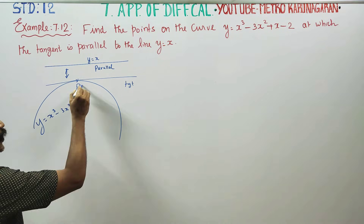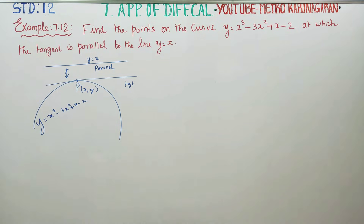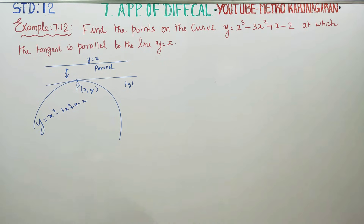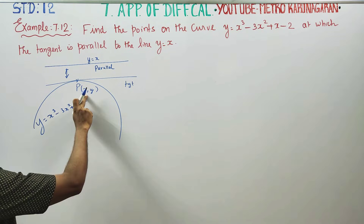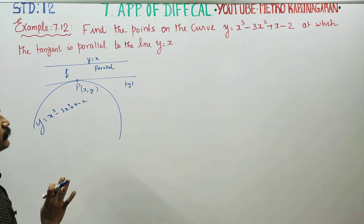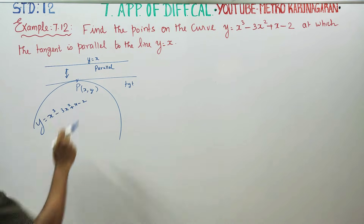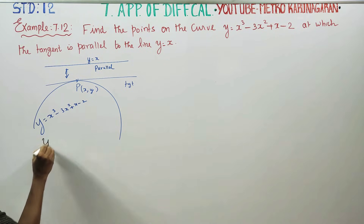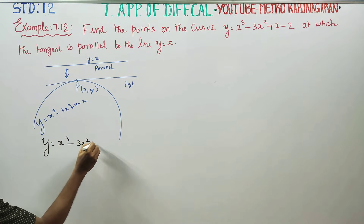Find the point (x, y) — that is the question. The curve is given, and we need to find the point on the curve where the tangent is parallel to the line y equals x. Using this information, we proceed. The curve equation is y equals x³ minus 3x² plus x minus 2.